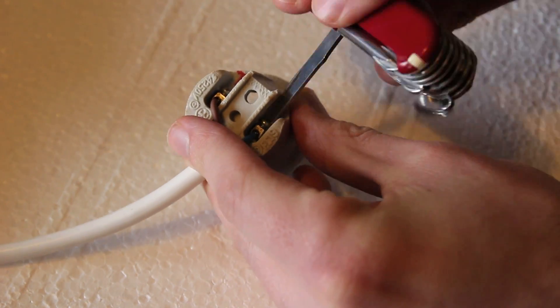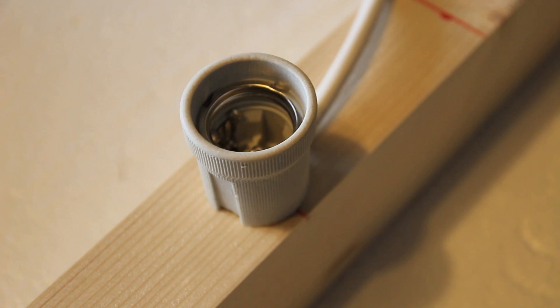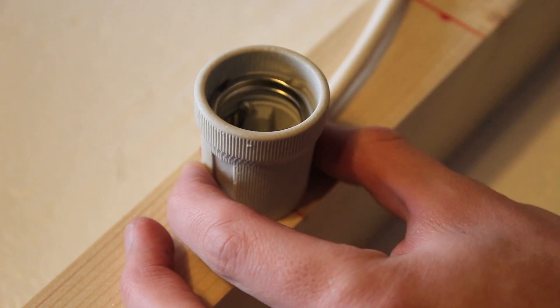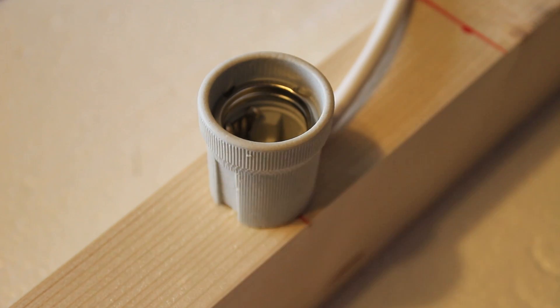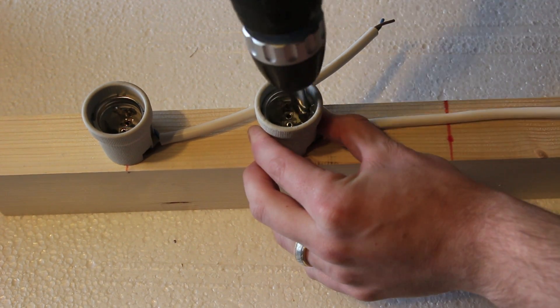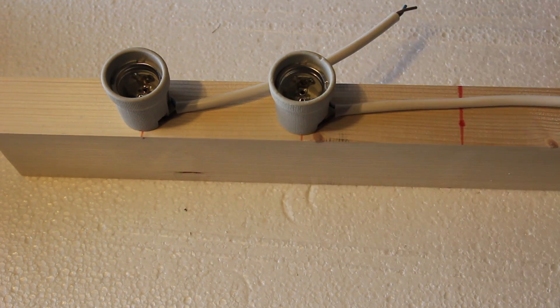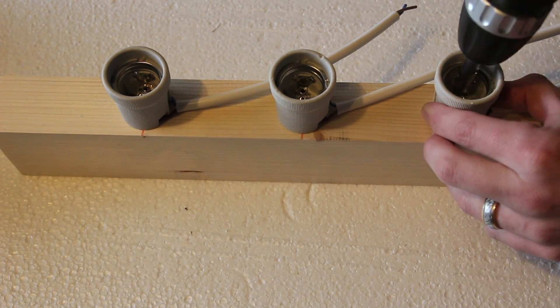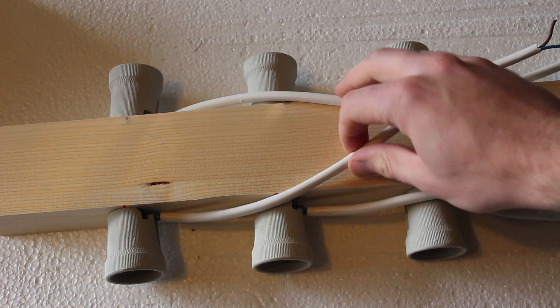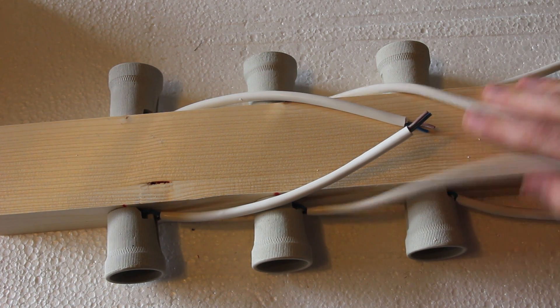Each socket can then be screwed down onto the wood. There's three on each side, and then I need to flip over the plank of wood and add three to the other side, also evenly spaced. It helps to have the wires facing in the same direction. Here you can see the six sockets evenly spaced and screwed to the piece of wood.